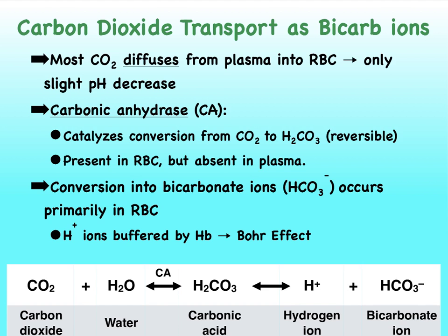By the way, since most of our carbon dioxide diffuses almost immediately from the plasma into our red blood cells to then participate in this reaction, it prevents the pH from changing too much in our blood. So inside of our red blood cells, the carbonic anhydrase enzyme can very quickly convert carbon dioxide and water into carbonic acid, which can then dissociate into its individual hydrogen ions and bicarbonate ions.